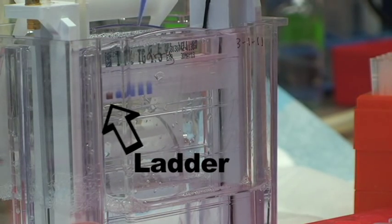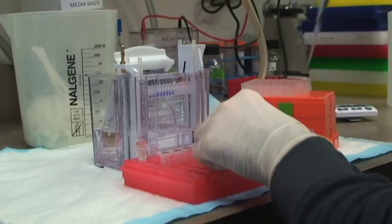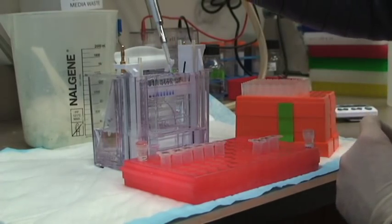The first sample is a mixture of proteins of known sizes. We call this a ladder, and you can use that to compare your samples so you can see how big the different proteins are.